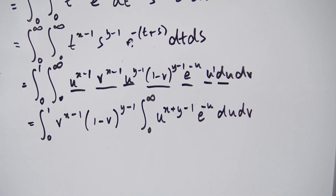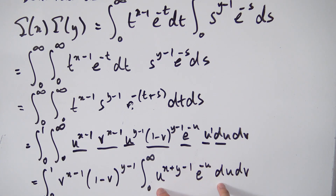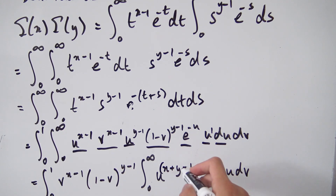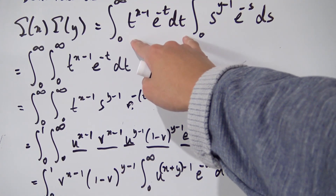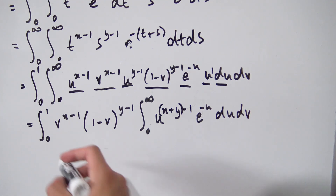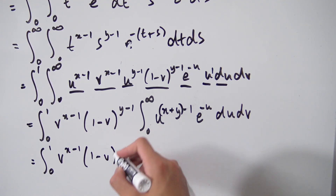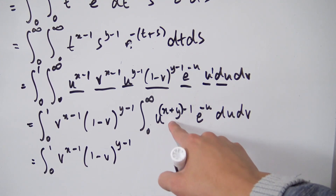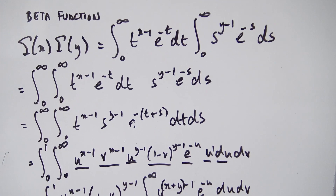That inner integral looks familiar — comparing it with the original gamma function integral, we have u to the (x+y) minus 1 times e to the minus u du, integrated from 0 to infinity. This is exactly gamma(x+y). Since gamma(x+y) is independent of v, we can factor it outside the integral over v.